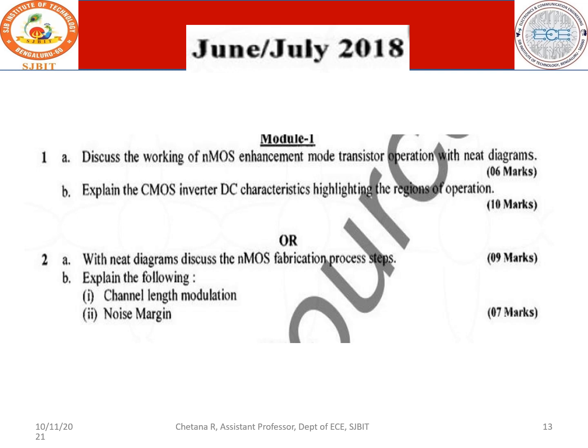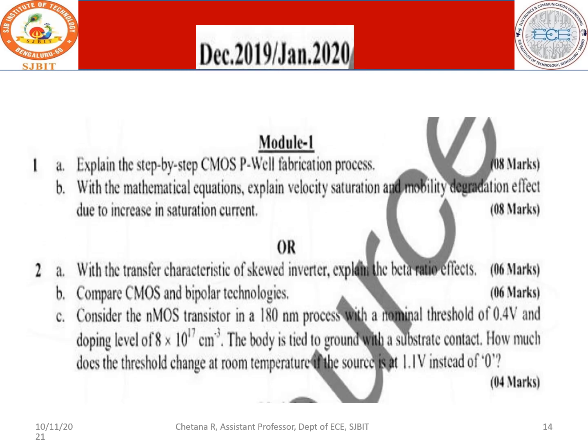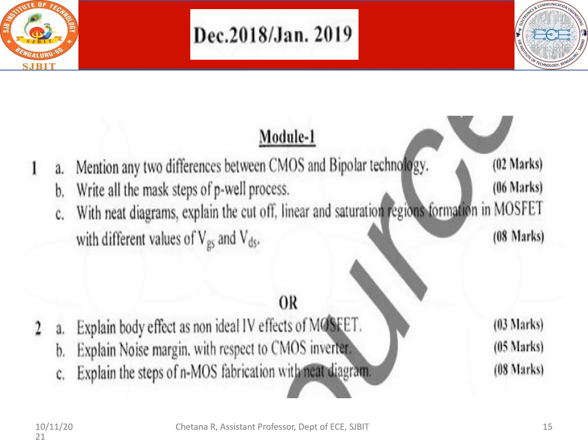Mathematical equations explaining velocity saturation and mobility degradation effects should be practiced. Transfer characteristics of a skewed inverter with beta ratio effects, and problems such as finding the threshold voltage change for an NMOS transistor with nominal voltage — these are all from previous year question papers. Please note the marks distribution and prepare accordingly with the relevant contents provided and the prescribed textbook.